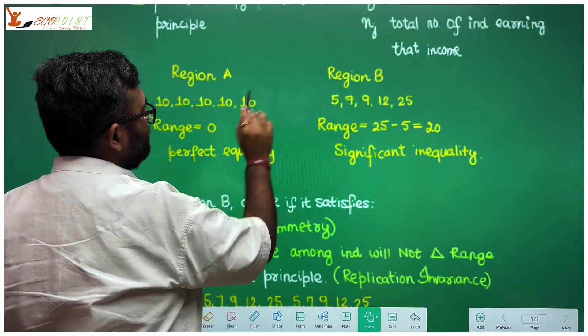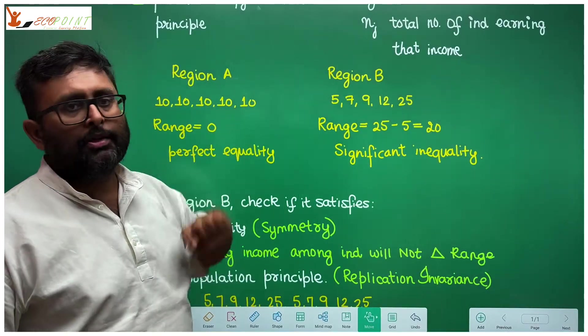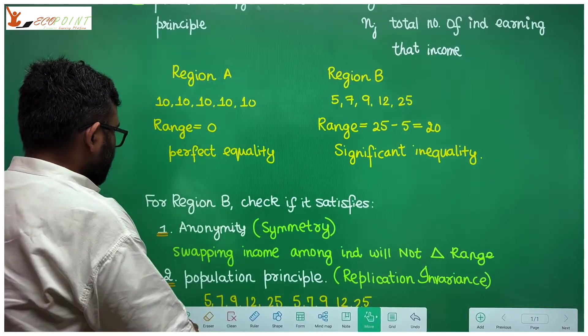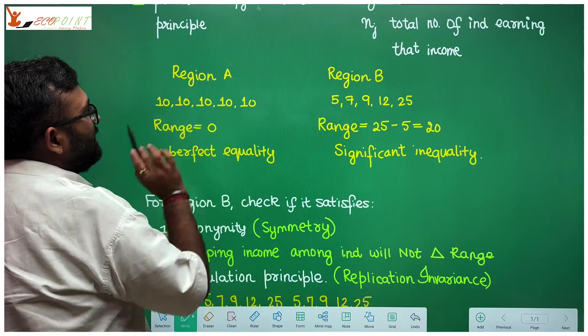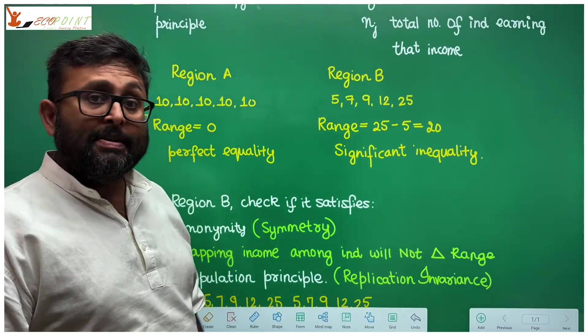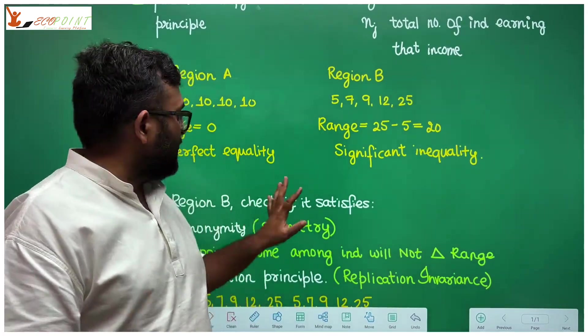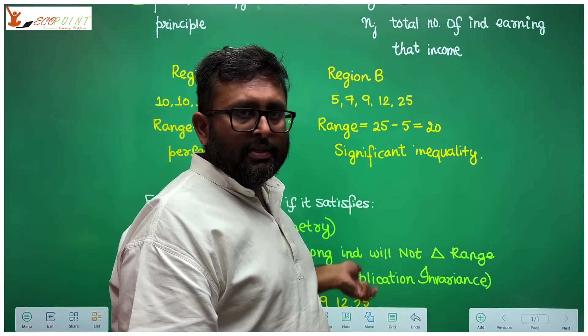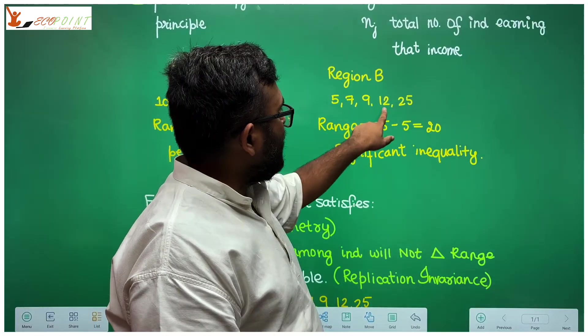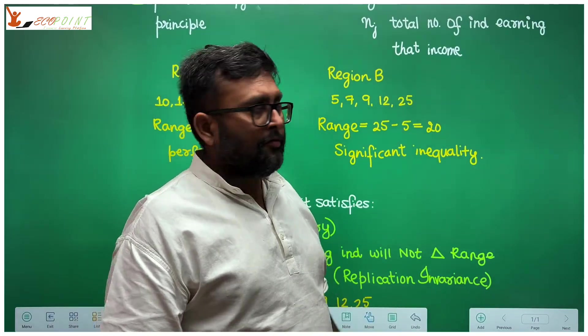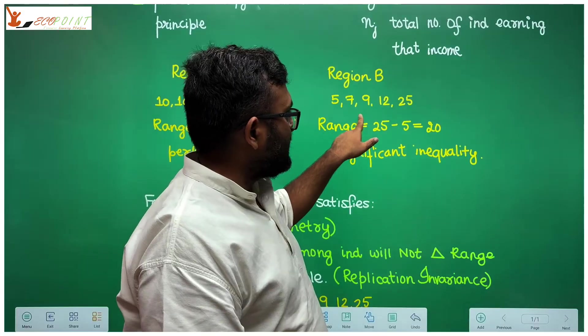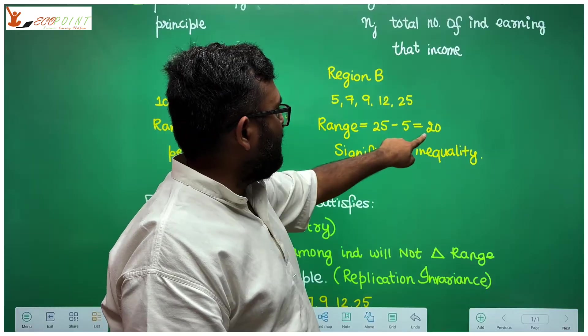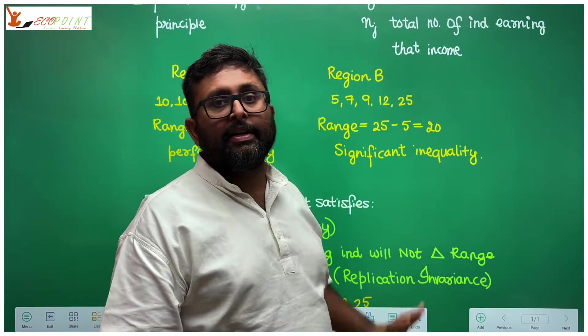The example says this. You look at this region and this region. In region A, everyone has same income. So what is the maximum income? Maximum income is 10 and minimum income is also 10 so the range is 0. It means everyone is earning equal income. There is perfect equality as far as income is concerned. Let's look at this example. Region B: 5, 7, 9, 12, 25. This is the income distribution. So what is the maximum income? 25. What is the minimum income? 5 and the range is 20. So as compared to this, of course, there is significant inequality.